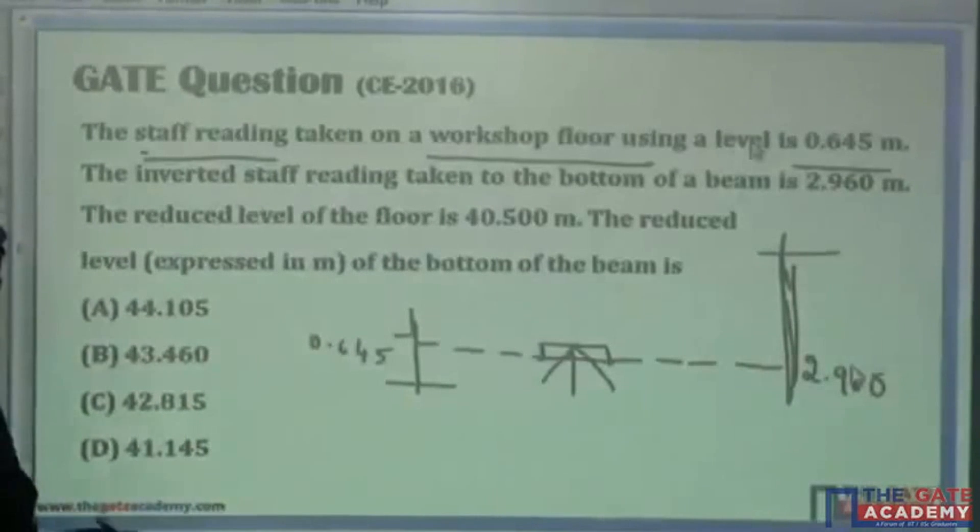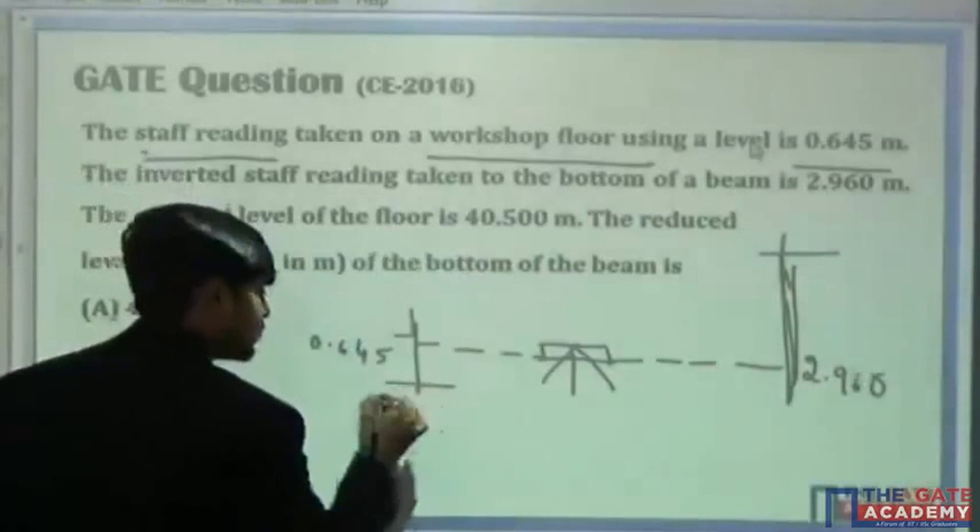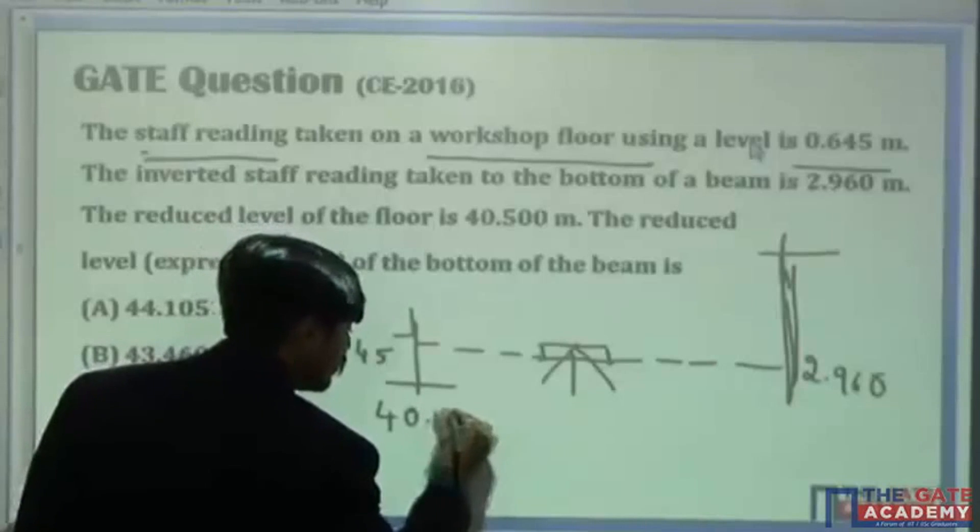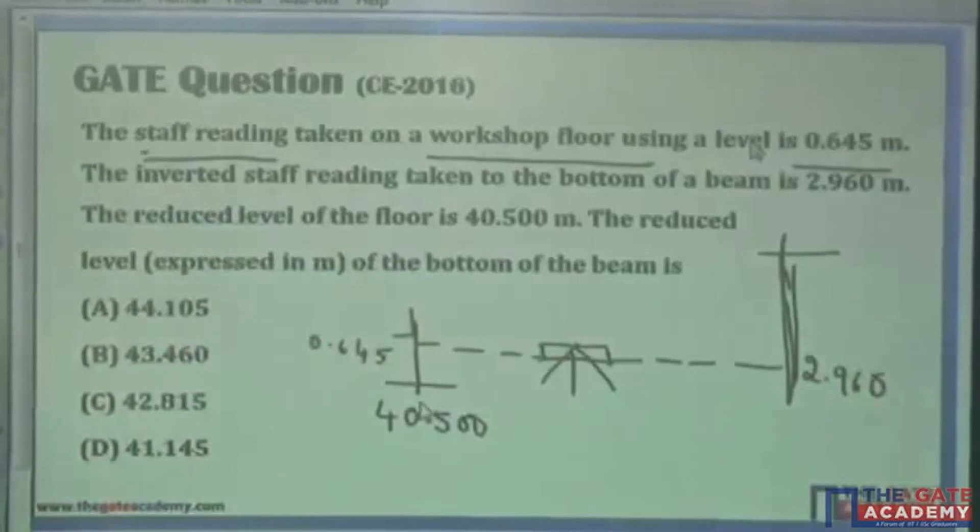Now, continuing the question. The reduced level, that is RL. RL of the floor is given. That is, here, the RL of this point is 40.500 meters.